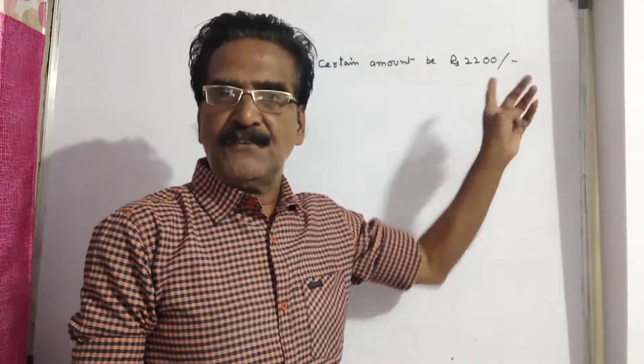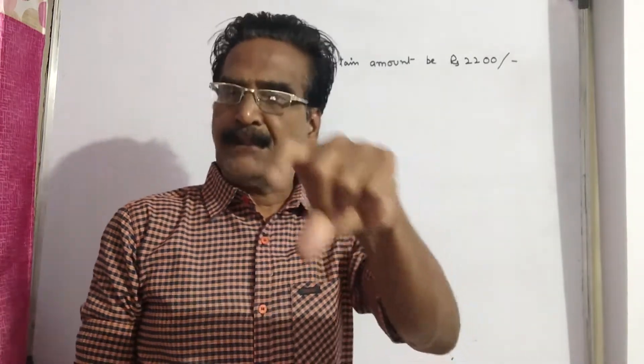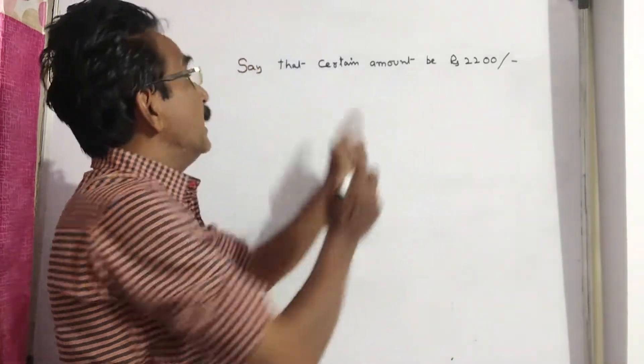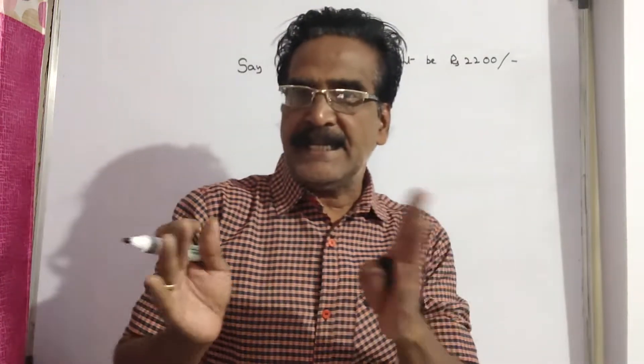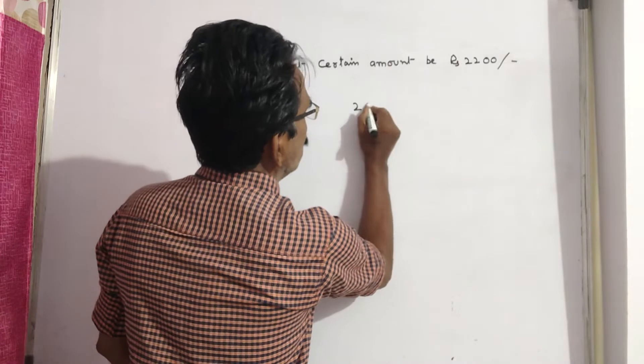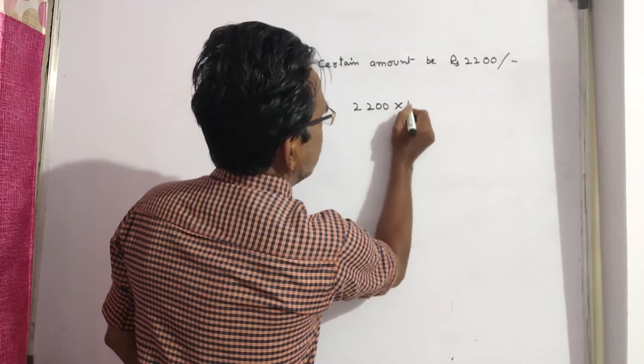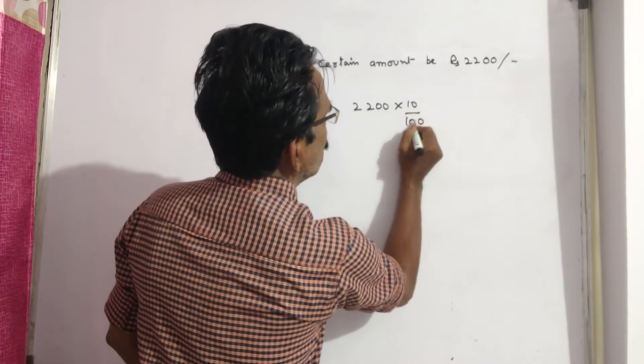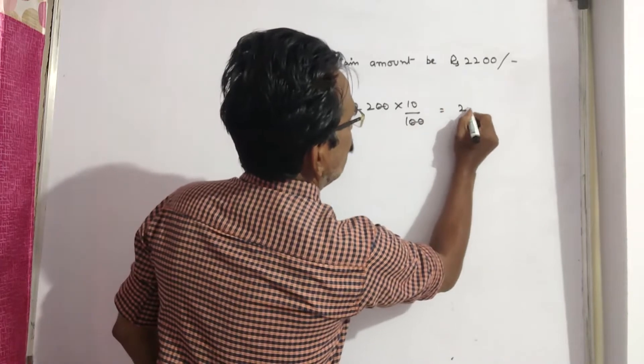See, now the price is reduced by 10 percent. So what is 10 percent of 2200? What is 10 percent of 2200? That is equal to 220 rupees.